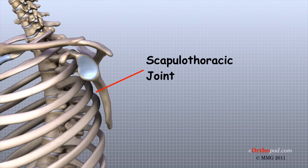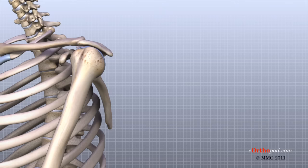This joint, called the scapulothoracic joint, is important because it requires that the muscles surrounding the shoulder blade work together to keep the socket properly aligned during shoulder movement.